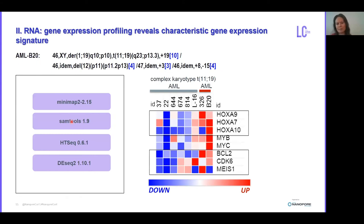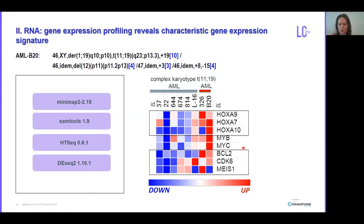Using the same reads, we performed RNA sequencing for gene expression profiling using a minimap aligner in a standard RNA sequencing pipeline. The two cases B20 and 3-to-6, both having the translocation 11-19, cluster together, and with this shallow RNA sequencing you can capture the upregulation of HOX-A genes, MYC, and others, which is characteristic for the biology of those tumors.